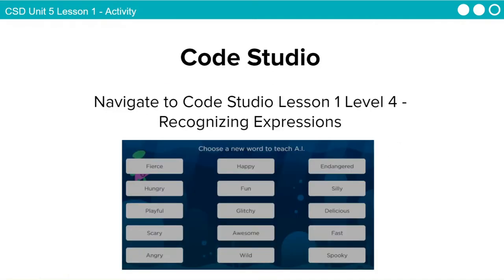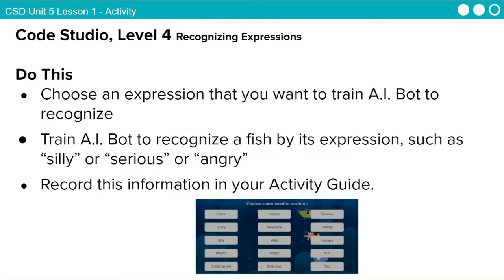Now we're going to try one more, and this will be a little bit more challenging. For this level, you are going to choose an expression to train AI Bot to recognize. There are lots of expressions here: fierce, hungry, playful, awesome, wild, silly, delicious, fast, spooky — there are a lot of different choices.